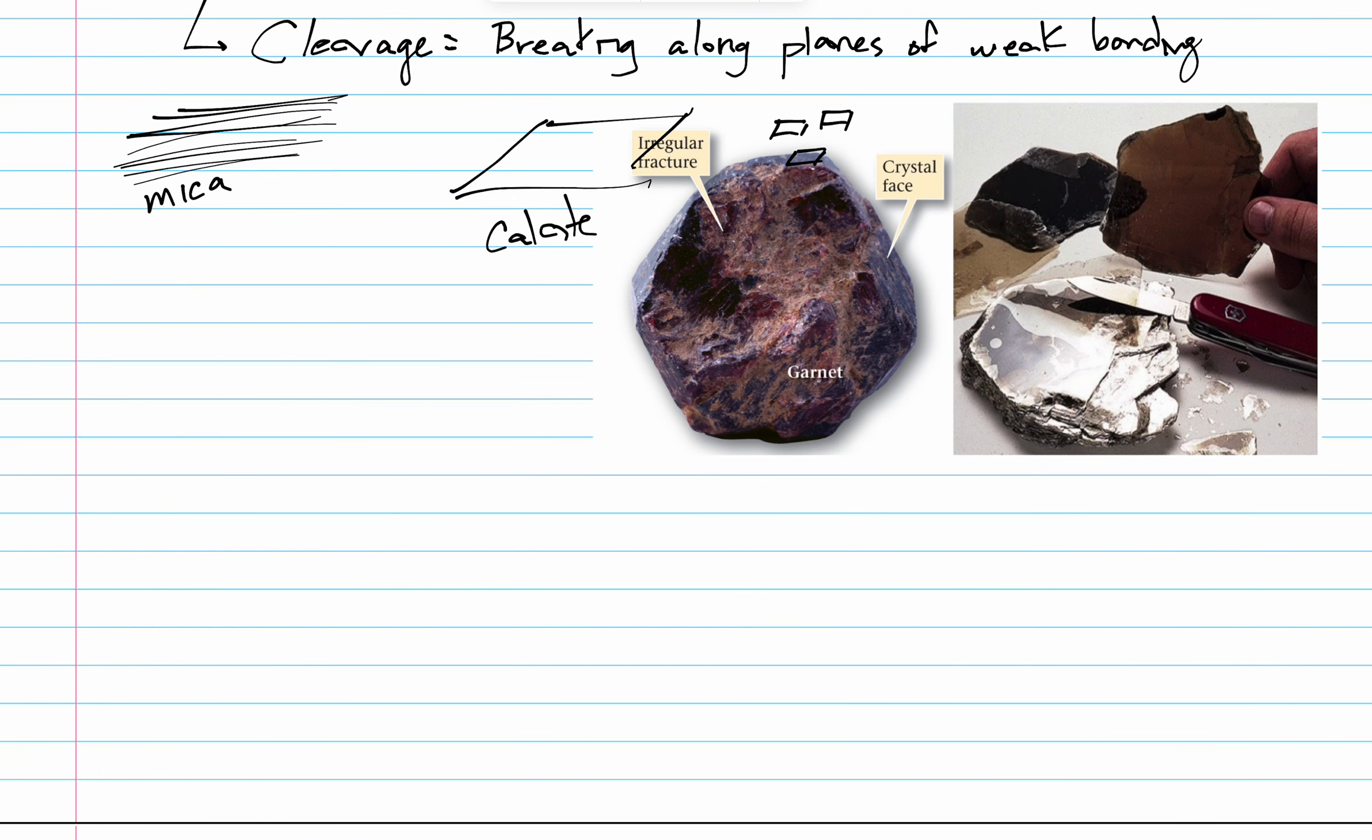And then number eight, the last characteristic that I want you to know is going to be like assorted or other. Some minerals have properties that are just unusual to themselves and fairly unique. For example, some minerals are magnetic. That makes them really easy to identify. Some react with HCl. That's hydrochloric acid. And in fact, calcite is the one that does that. And that'll help you identify it in lab or future classes. And then other minerals react with light differently and they could be fluorescent. Those are the tools for mineral identification. Good luck.